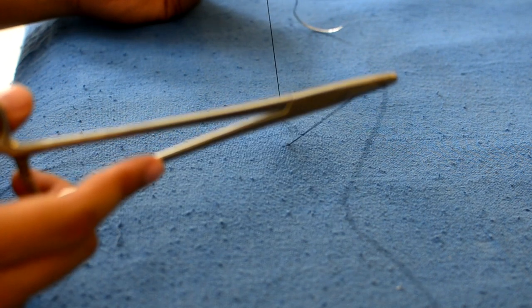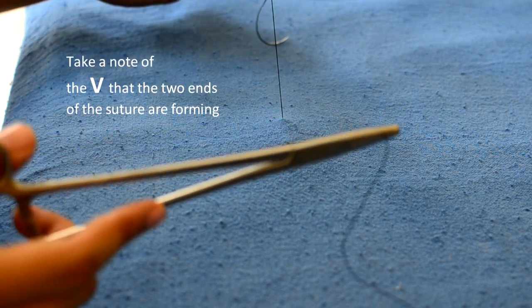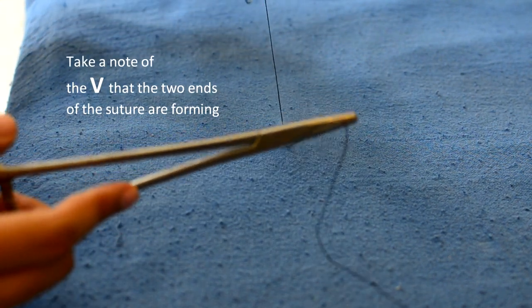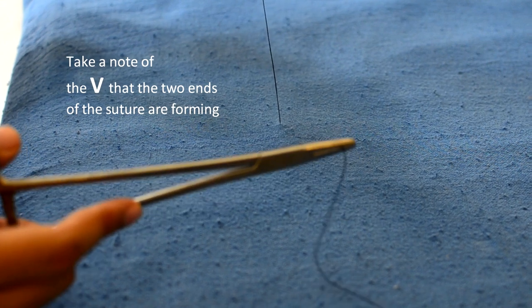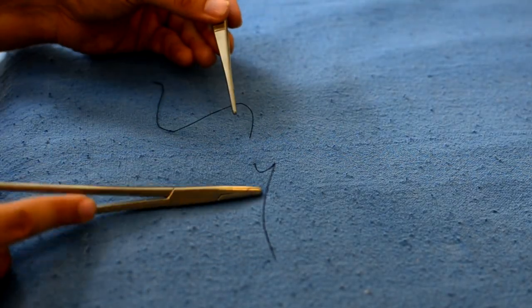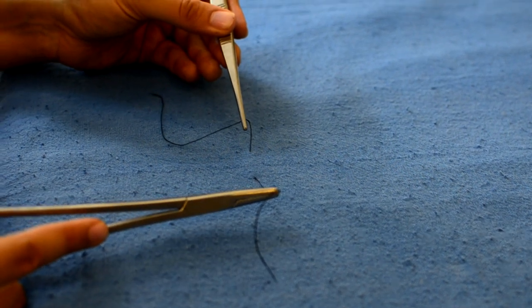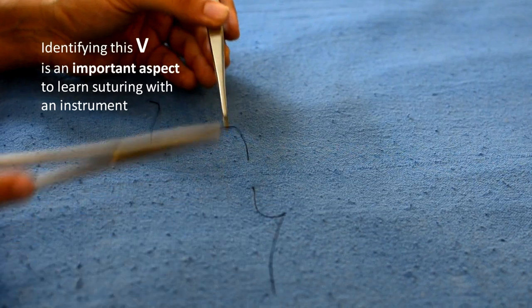Now let's take a look at the V that the two ends are forming. Identifying this V is an important aspect to learn suturing with an instrument.